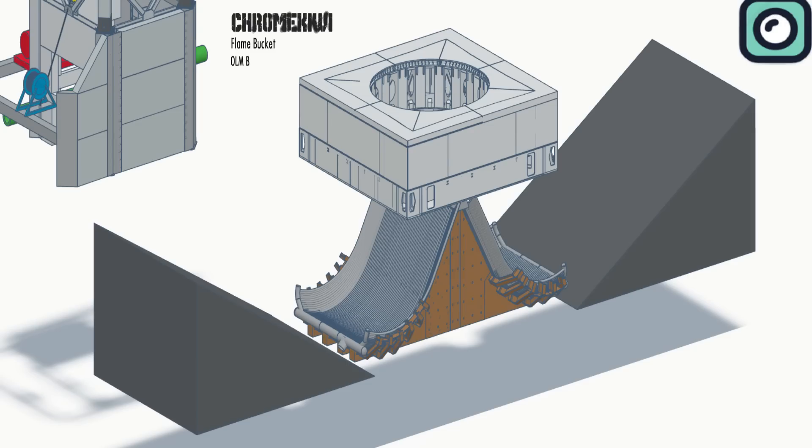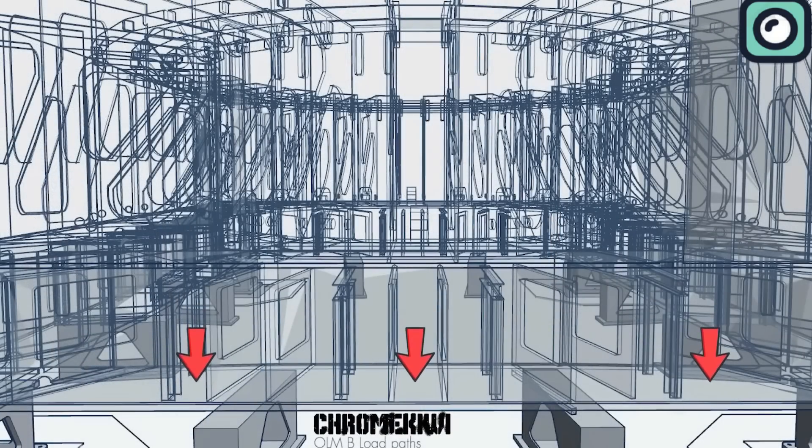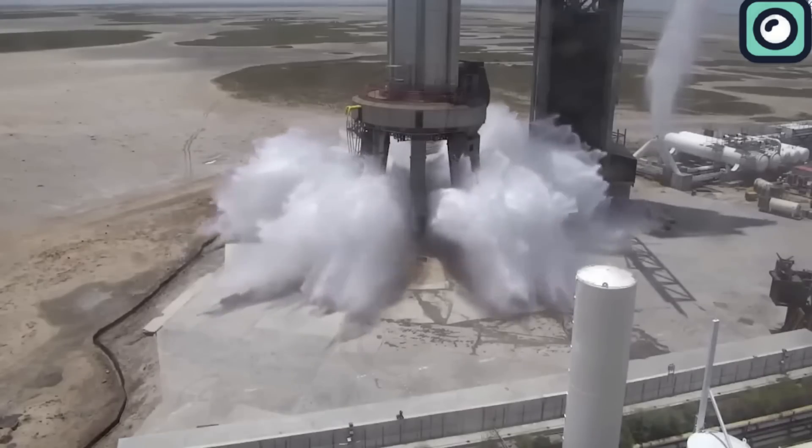SpaceX's flame diverter, however, incorporates modern design changes, combining with a water-cooled steel plate to disperse heat safely and efficiently. The steel plate, resembling an upside-down shower head,